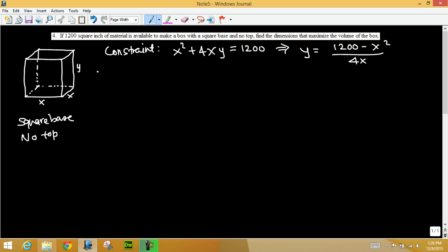Now next is the objective function, the function that we want to maximize or minimize. In this case maximize the volume of the box. So we want to maximize the volume, find the dimensions, that length, width and height. So the volume V as a function of x, let's say, because we are expressing y as a function of x. Volume is length times width times height, so x times x times y.